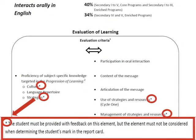The star at the end of some criteria means that this element has to be evaluated but for formative feedback purposes only. For example, the use of strategies should not be evaluated to determine the student's marks, but simply to help them improve their abilities.